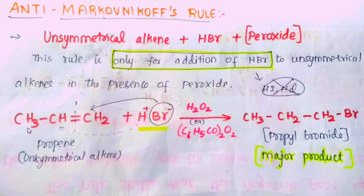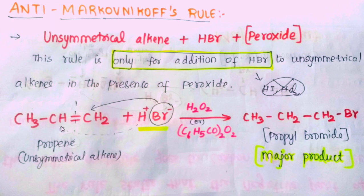Take propene — an asymmetrical alkene: CH₃–CH=CH₂ plus HBr. In the Markovnikov rule, the negative part (bromide ion) goes to the carbon having the lesser number of hydrogen atoms. In the anti-Markovnikov rule, it is the opposite: the negative part of the adding molecule goes to the carbon having the higher number of hydrogen atoms.